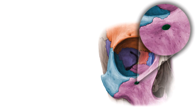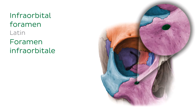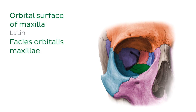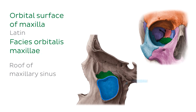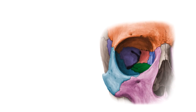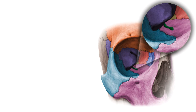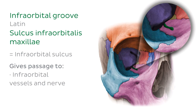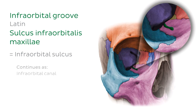Continuing clockwise around the infraorbital margin, you will see a small opening onto the anterior surface of the maxilla known as the infraorbital foramen. It gives passage to the infraorbital nerve, a branch of the maxillary nerve, in addition to the infraorbital blood vessels. Turning our attention to the inside of the orbital cavity, the orbital surface of the maxilla contributes significantly to the orbital floor, in addition to acting as the roof of the maxillary sinus. The posterior portion of the orbital floor is defined by the infraorbital groove or infraorbital sulcus, which gives passage to the infraorbital vessels and nerve. The infraorbital groove continues into the orbital floor as the infraorbital canal, before terminating on the anterior surface of the maxilla as the infraorbital foramen.